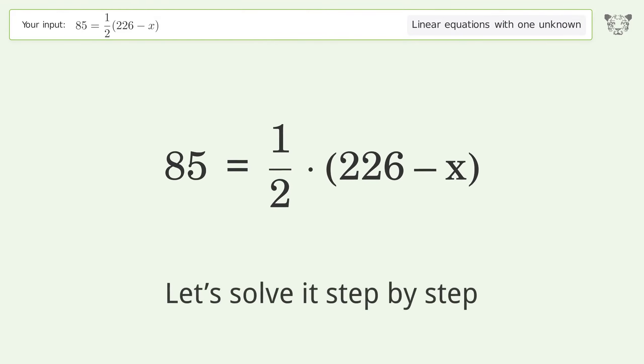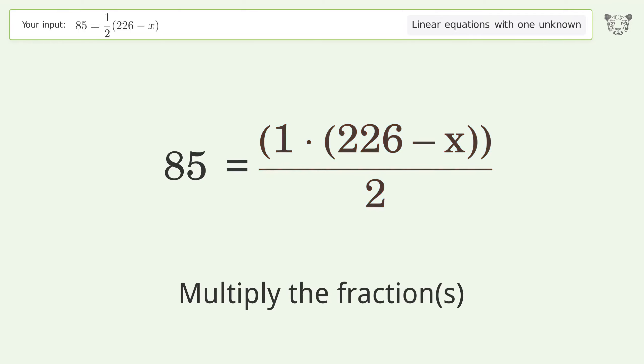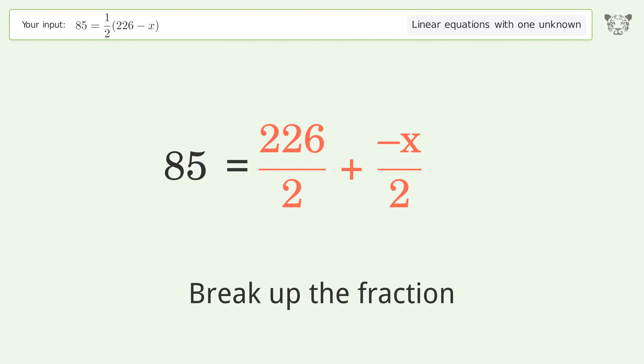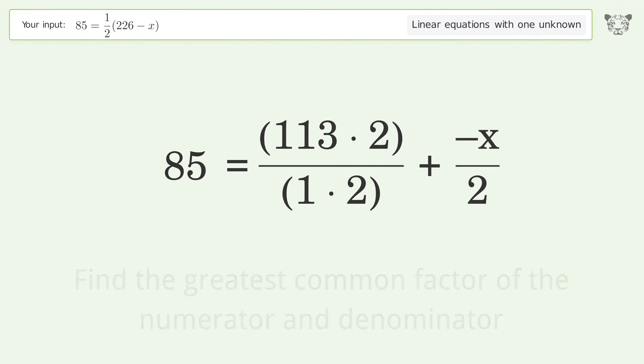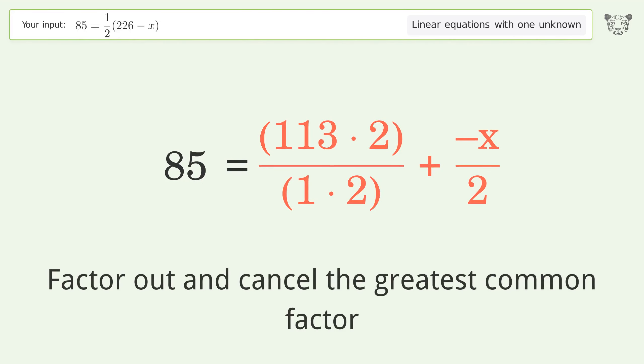Let's solve it step by step. Simplify the expression. Multiply the fractions. Break up the fraction. Find the greatest common factor of the numerator and denominator. Factor out and cancel the greatest common factor.